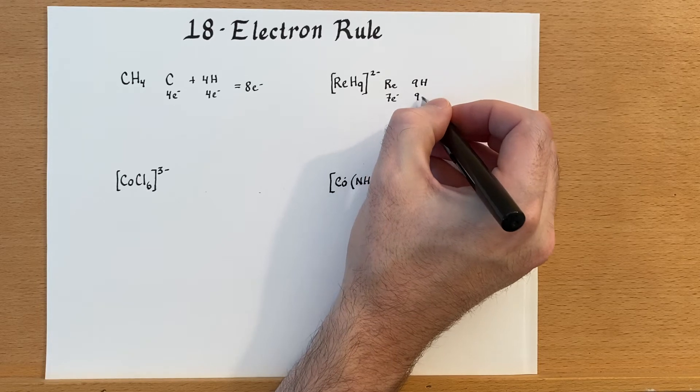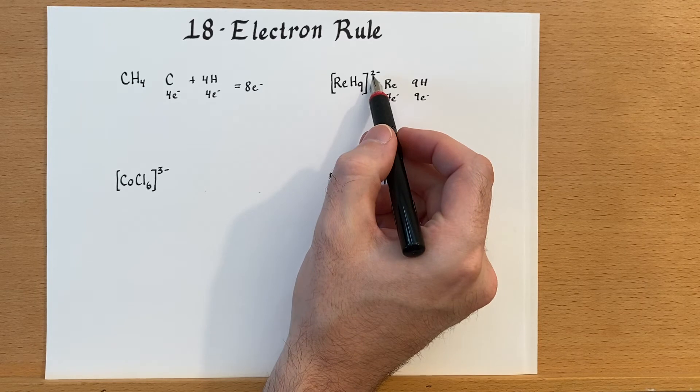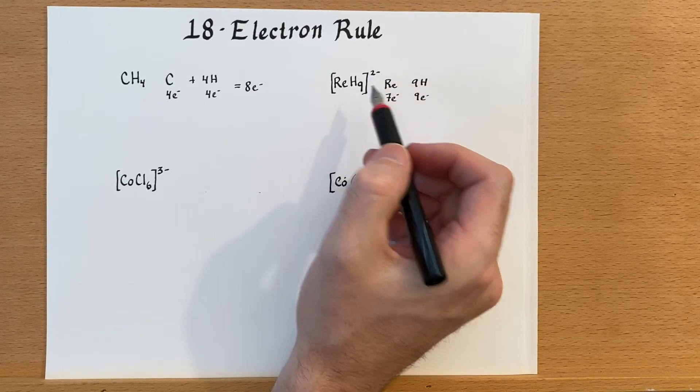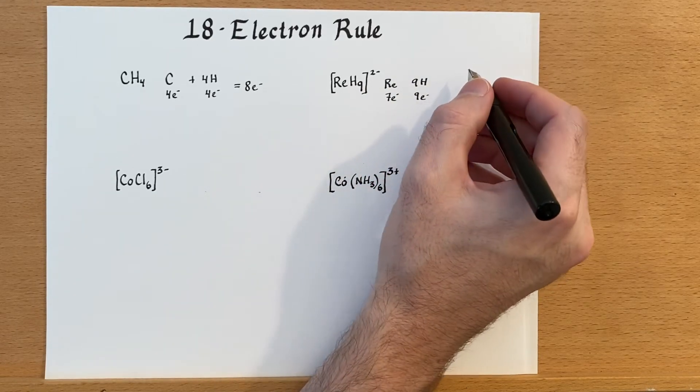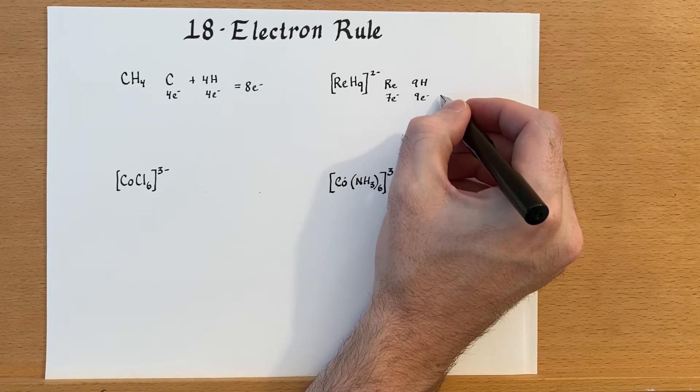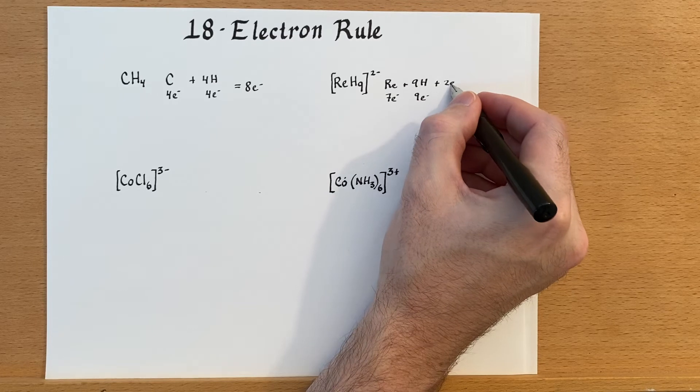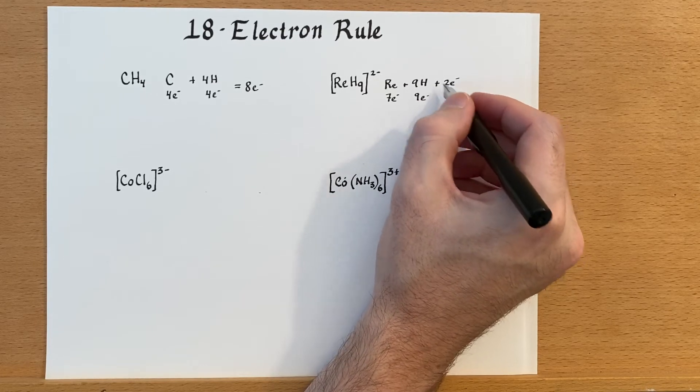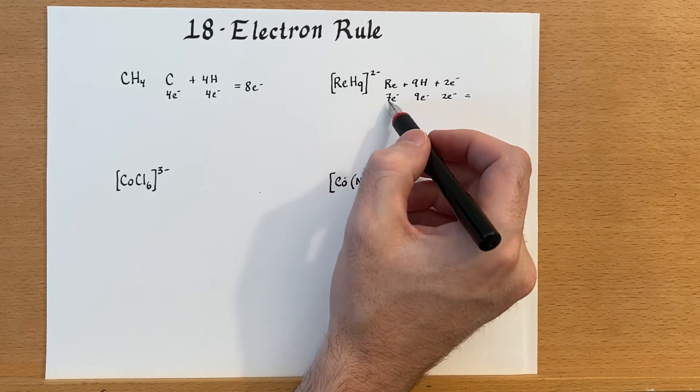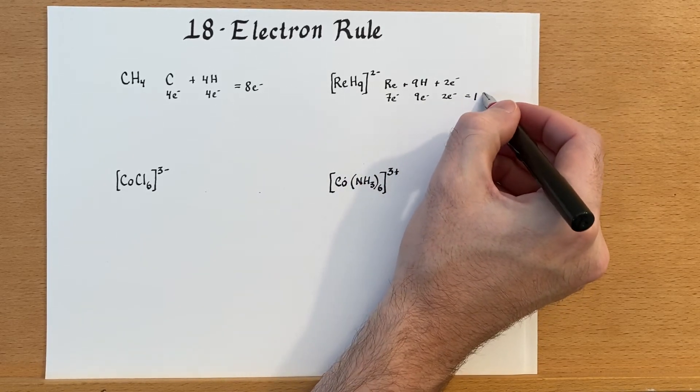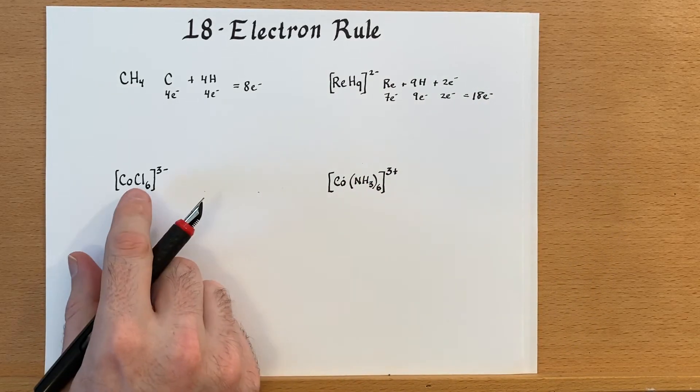So that's nine electrons. And then this entire complex is negatively charged, so there are two negative charges, so there must be two additional electrons on the complex. So plus two electrons for the charge. So seven plus nine plus two is 18 electrons.